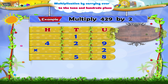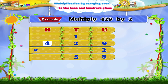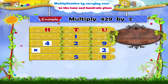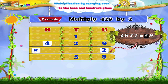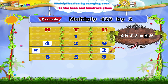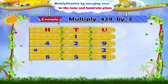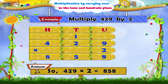Now multiply the hundreds digit 4 in 429 by 2. We get 8 hundred. Write it in the product in the hundreds place. The product is eight hundred and fifty-eight.